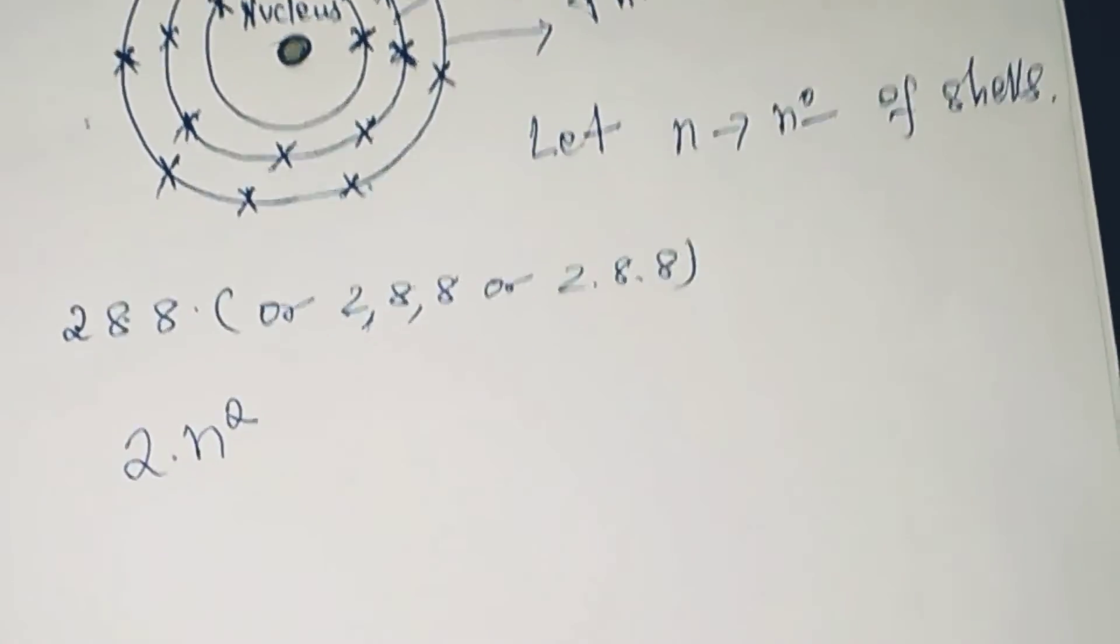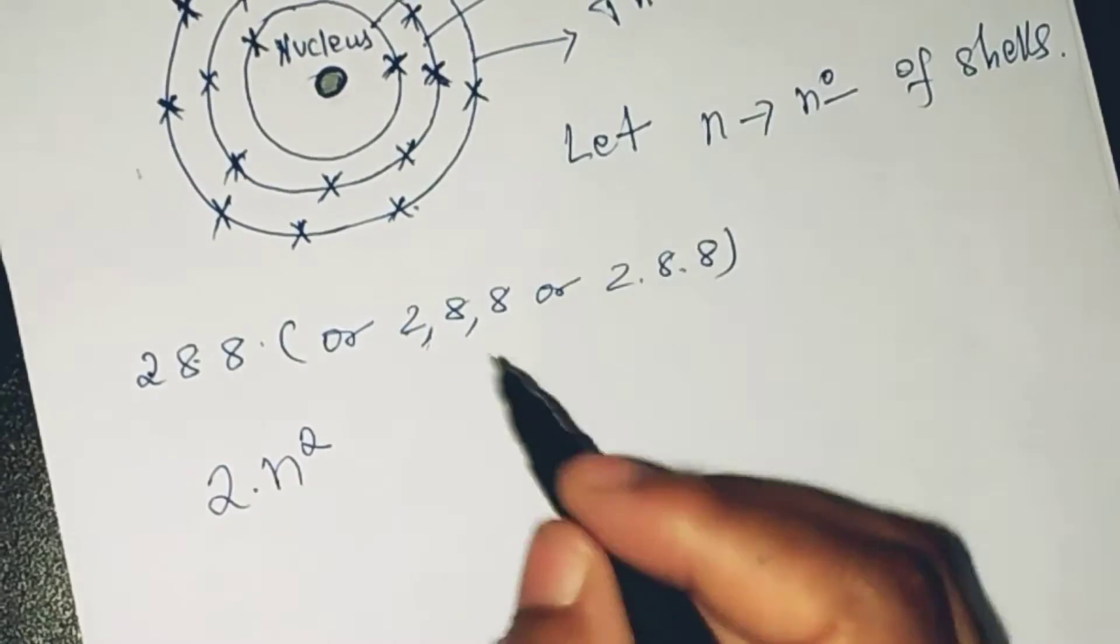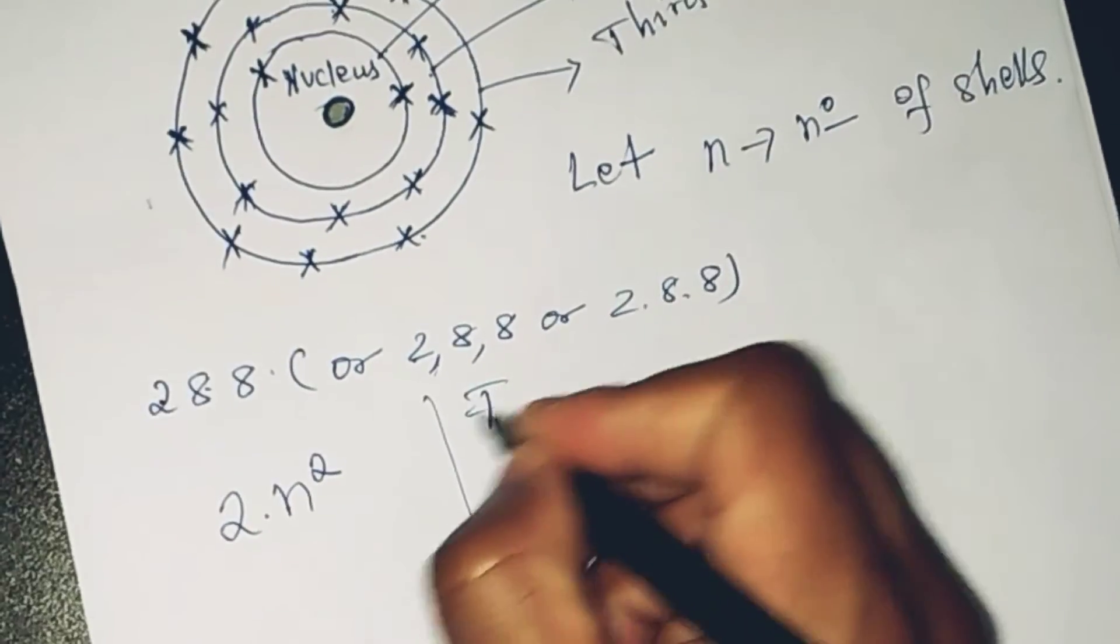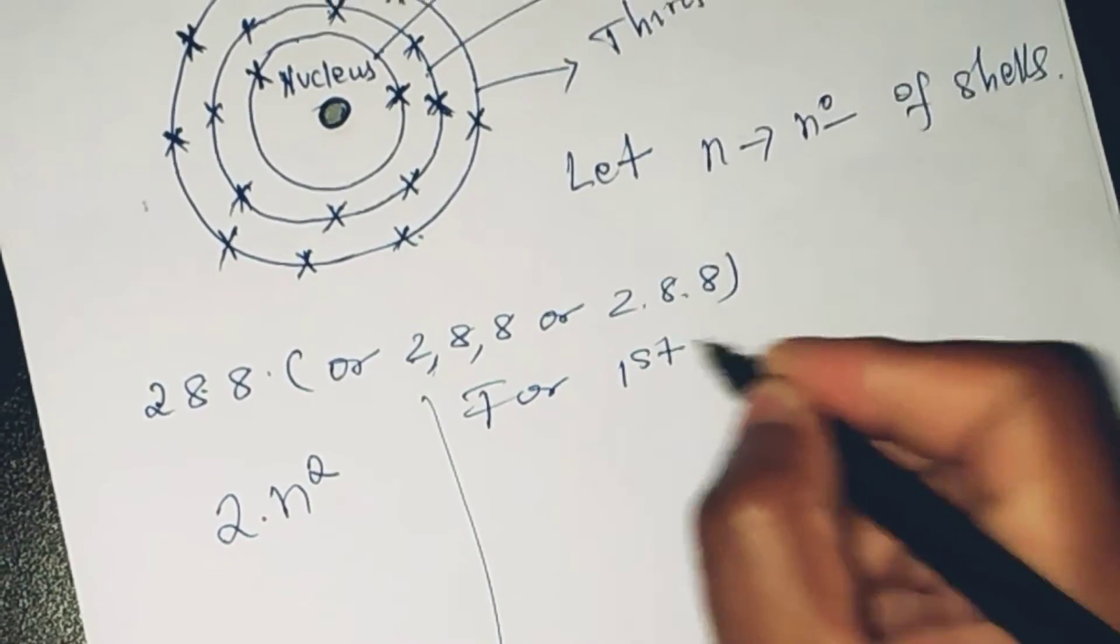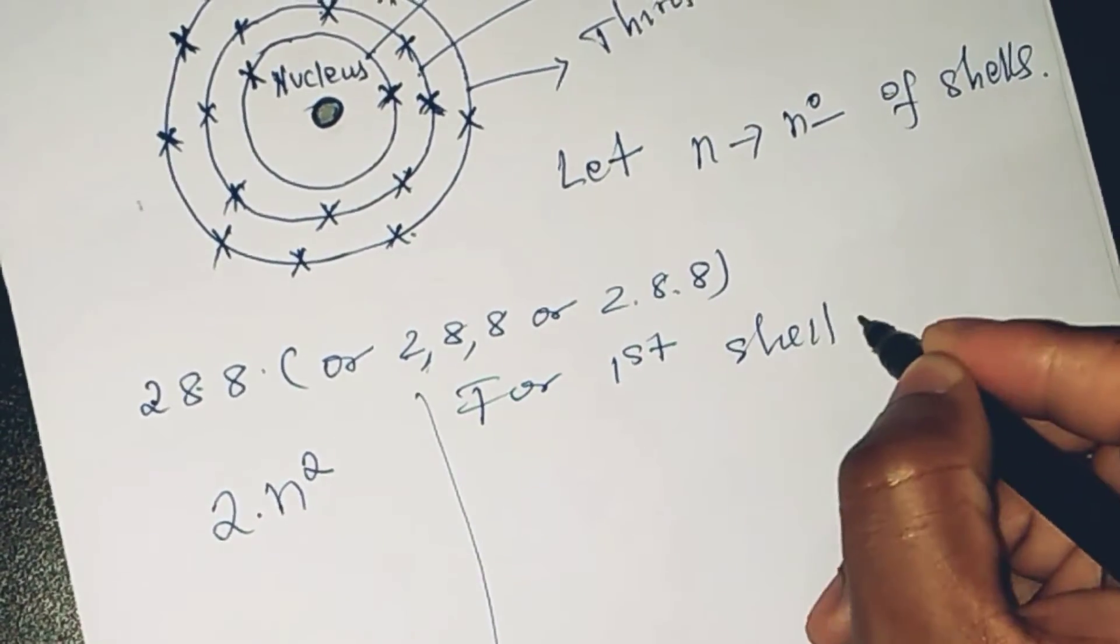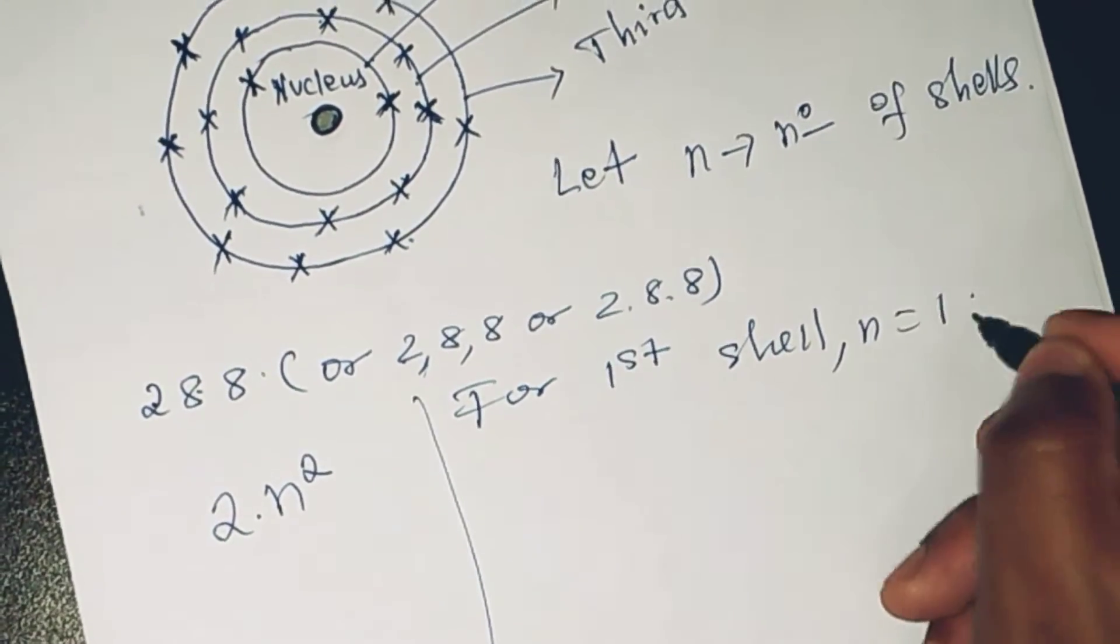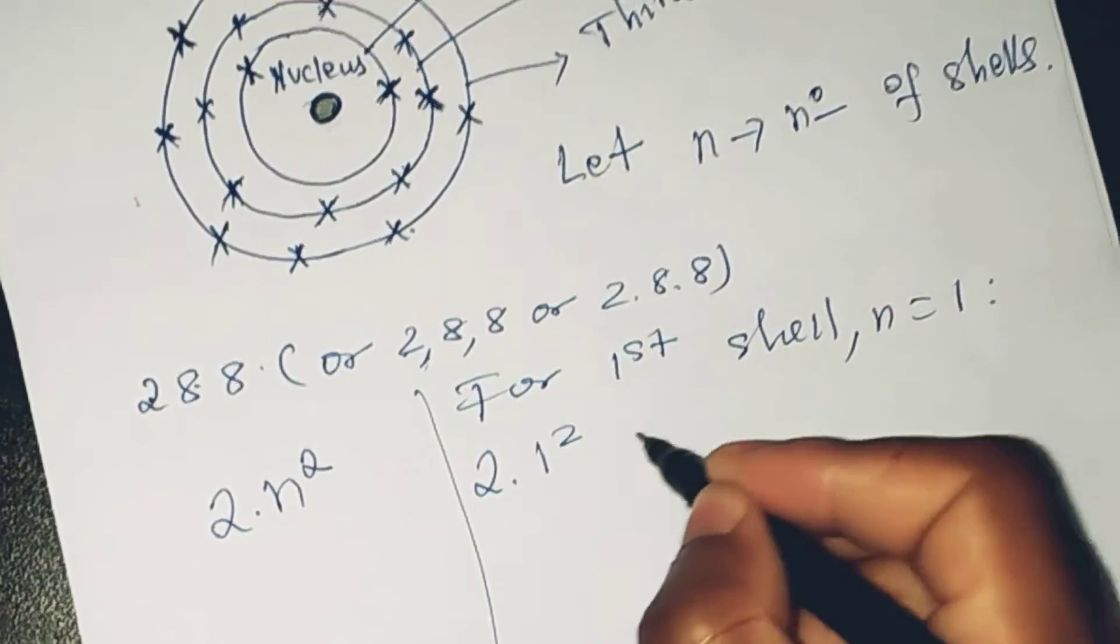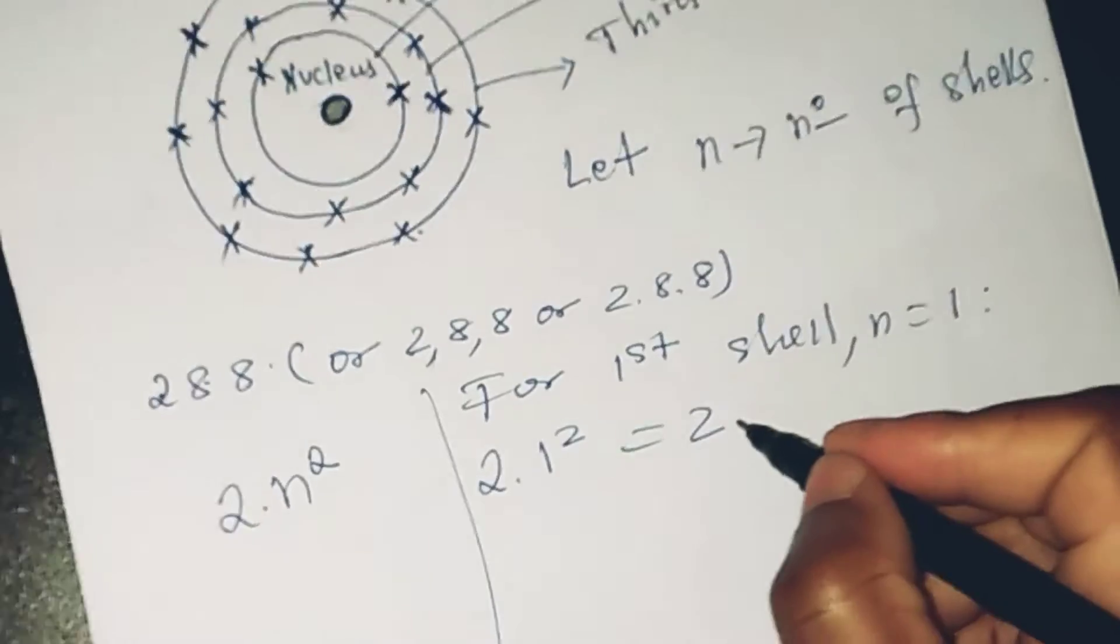For the first shell, n is equal to 1. So this means 2 times 1 squared equals 2, so in total it holds two electrons.